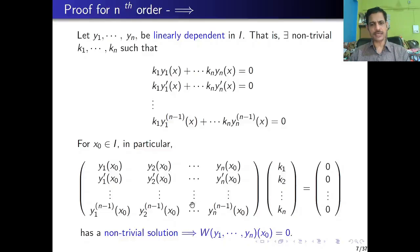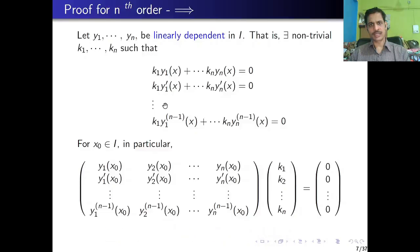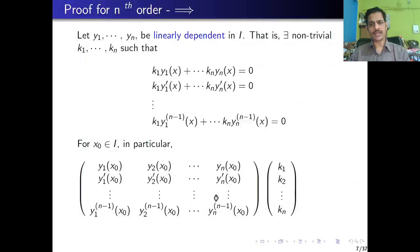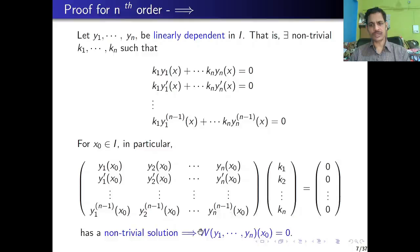So we have proved the first claim: if n solutions y₁, y₂, ..., yₙ of the differential equation are linearly dependent, then their Wronskian is zero at some point x₀. We now prove the converse: if the Wronskian is zero at some point x₀, then y₁, y₂, ..., yₙ are linearly dependent.